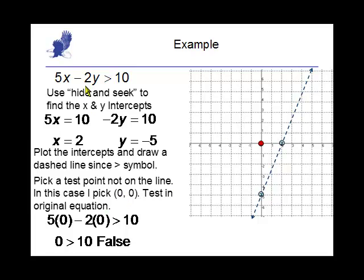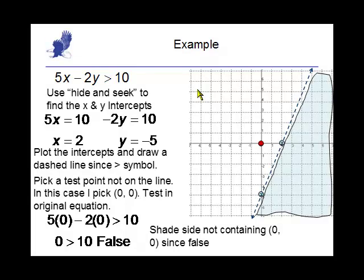If we put 0, 0 into the inequality, we get 0 greater than 10, which is false. That means that all the points on the side of the line where the test point is make it false. Therefore, the other side has the true, so we want to shade the side that's true.